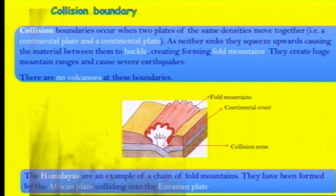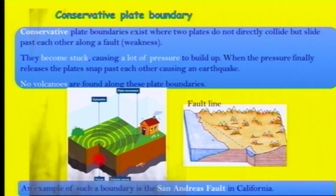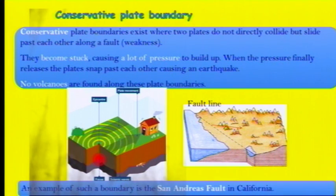We only get earthquakes at collision boundaries. A conservative boundary is another example where we only get earthquakes — we do not get volcanoes. It's when the plates are sliding either past each other in opposite directions or both sliding in the same direction but at different speeds. They become locked and one will break free. The focus is in the crust where the earthquake is actually happening. The epicentre is the point on the surface of the earth directly above the focus where we feel it most. The yellow rings around that point are seismic waves — the waves of energy coming out from the main point of the earthquake. A good example of this type of plate boundary is the San Andreas fault line in California.